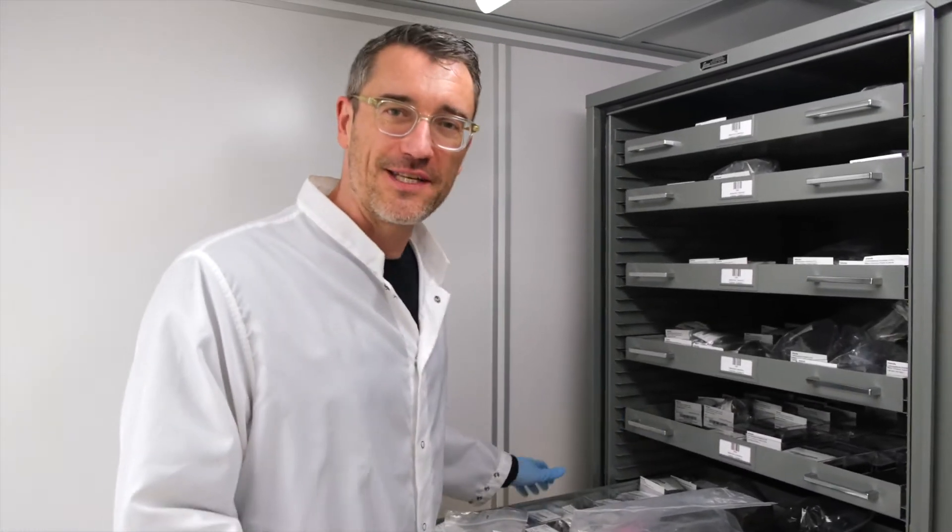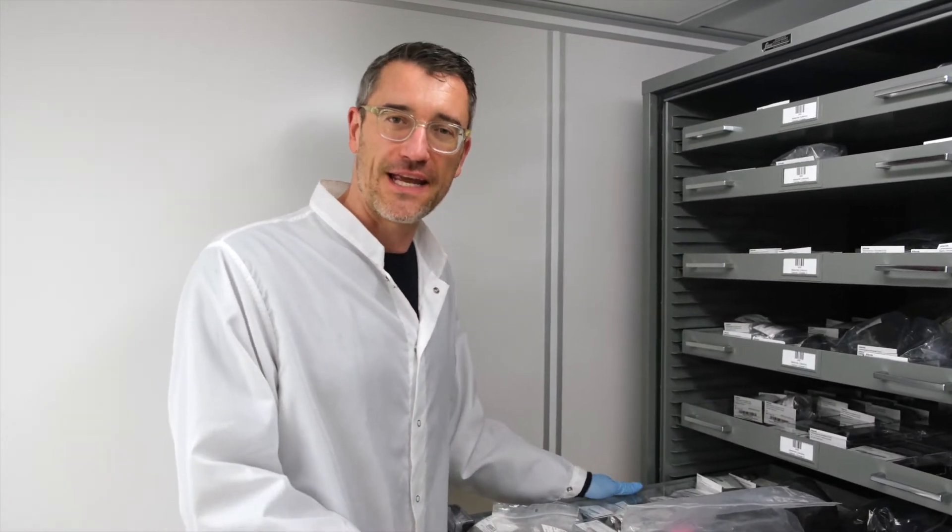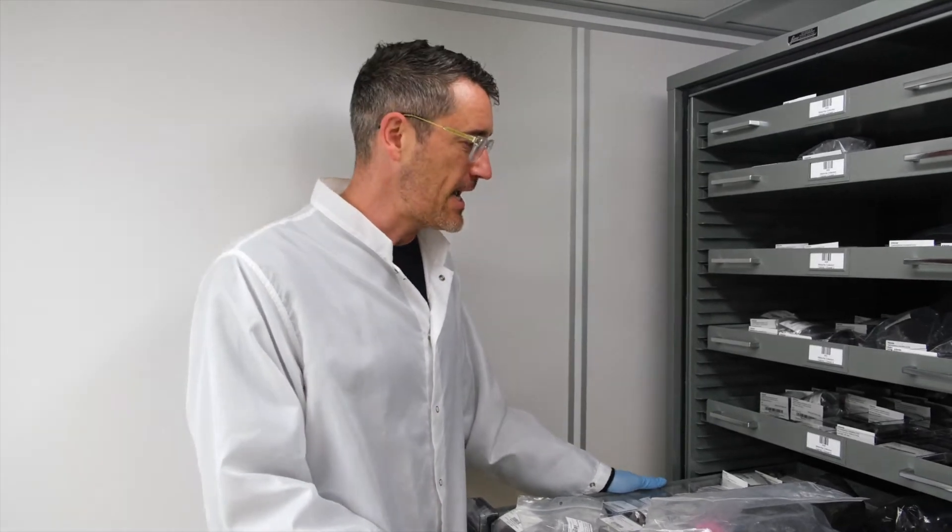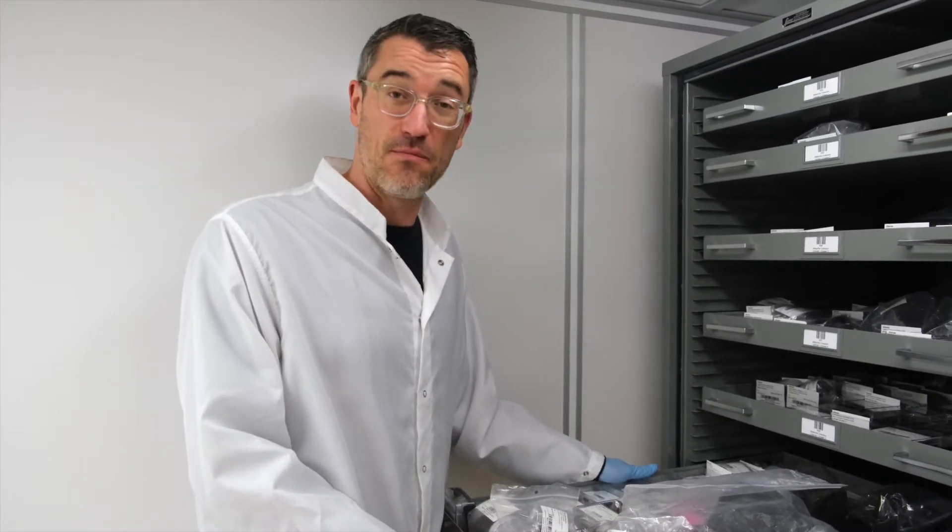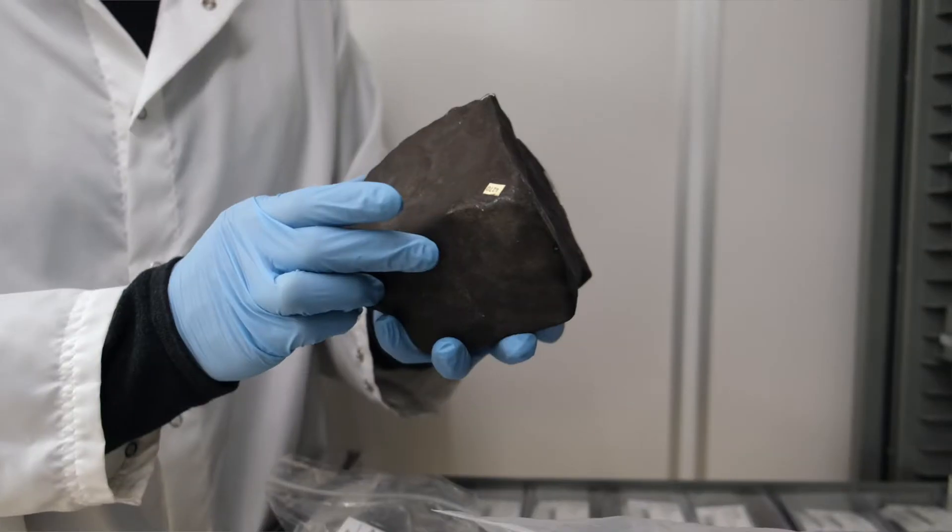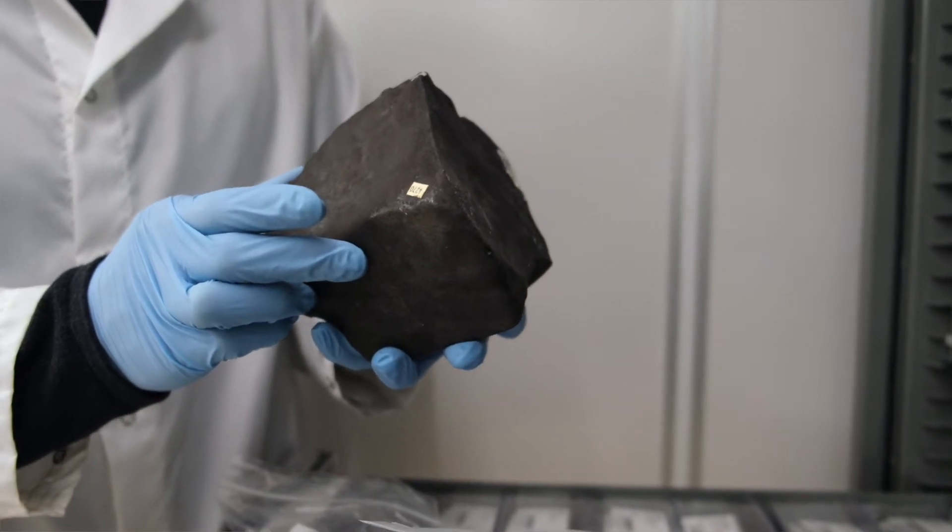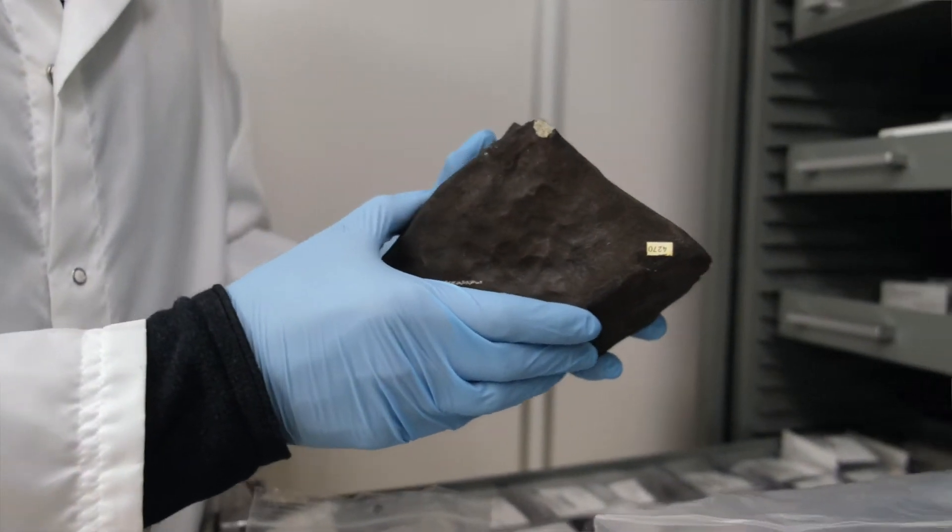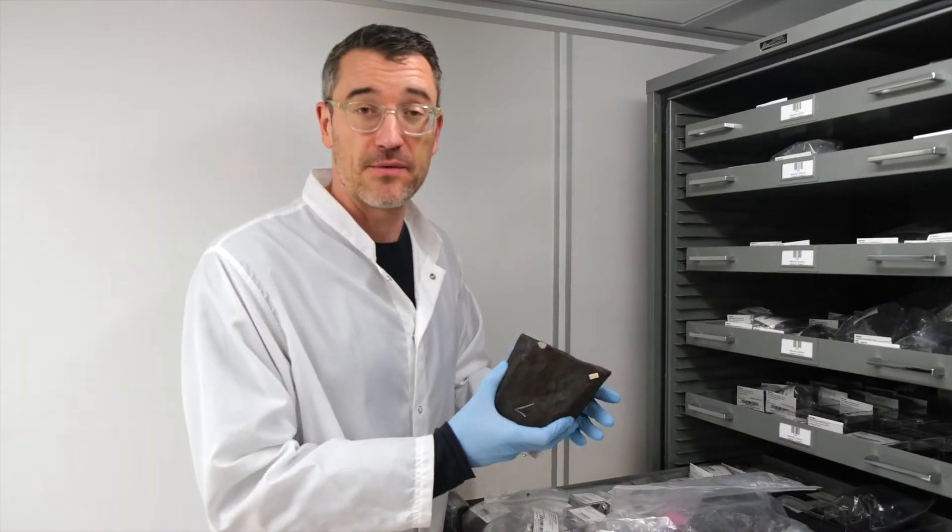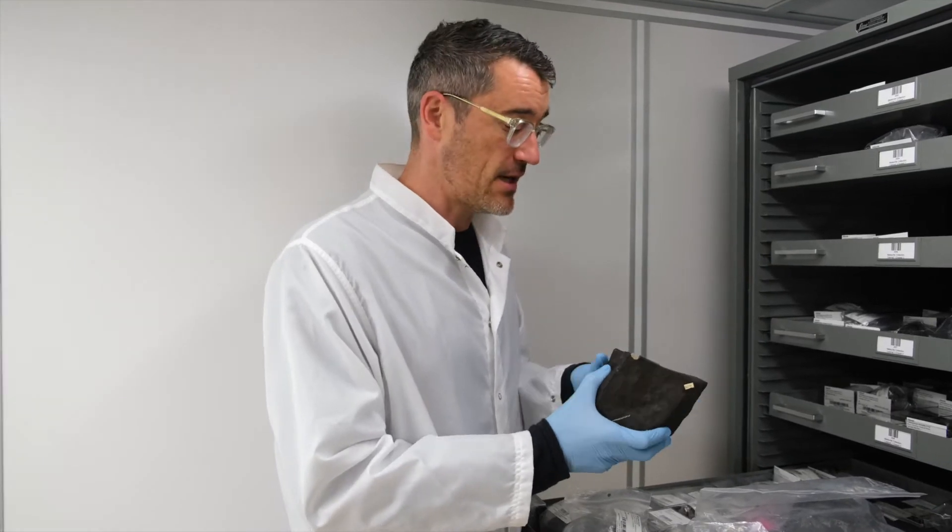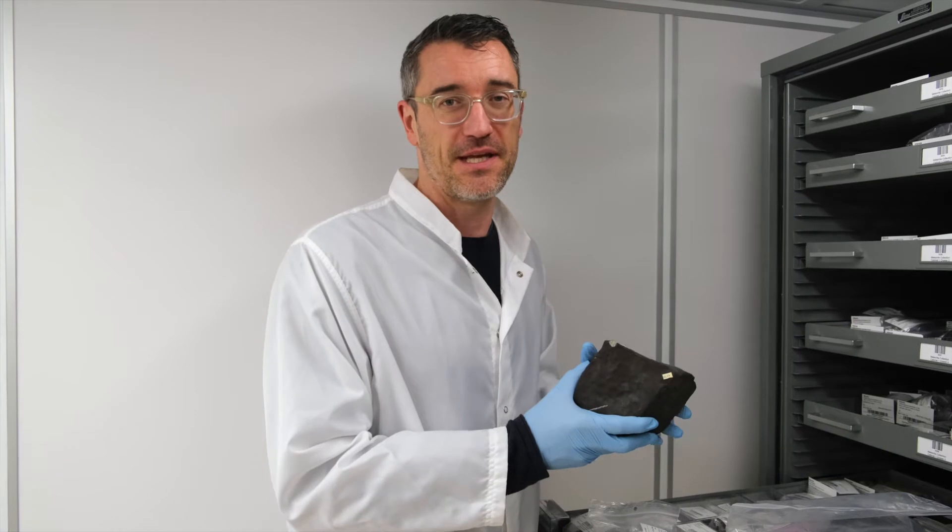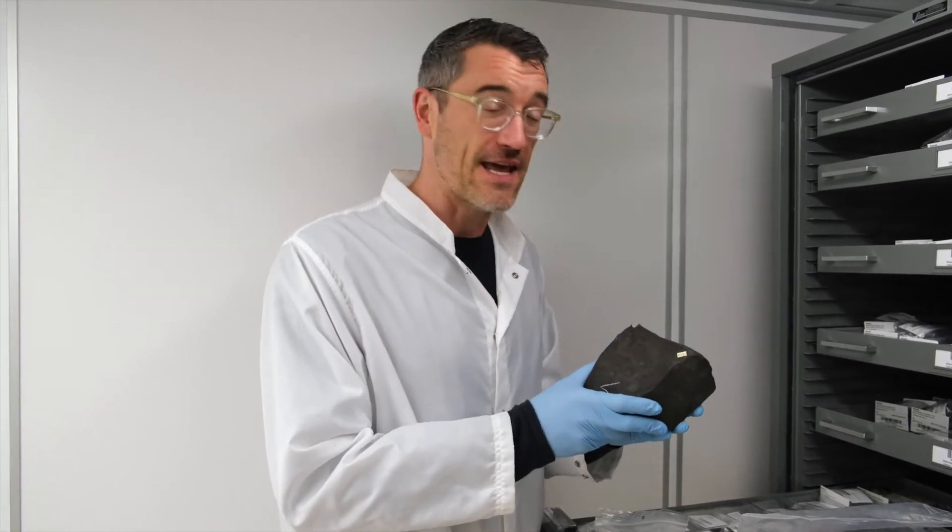One of the most famous meteorites in our collection is Bruderheim. It fell on March 4th, 1960, in a small town northeast of Edmonton. There was a bright fireball seen at about 1 in the morning. The very next morning, this meteorite right here was found in the barnyard of a farmer and recognized as being a meteorite. A search was subsequently mounted and in the end over 300 kilograms of this meteorite were found in the subsequent days, weeks and months in that area.